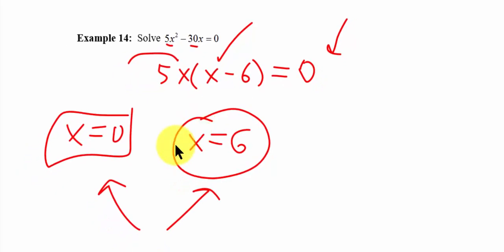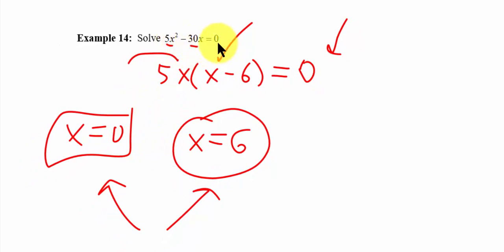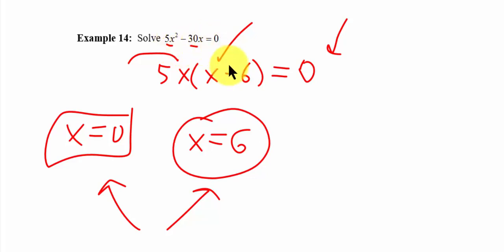That's the solution. If I take zero and put it in for x, I'll end up with zero. If I take 6 and place it in, I'll still end up with zero. So these are my two solutions to the equation.